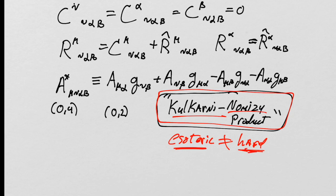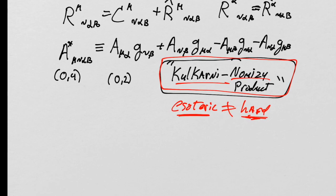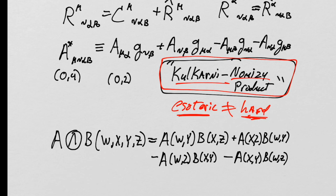We should understand what the Kulkarni-Nomizu product literally is in terms of our standard method of approaching tensors, which includes basis vectors and lots of opportunities to use the non-coordinate basis notation. So what is the Kulkarni-Nomizu product in coordinate-free language? And then how does it translate into this expression here? Let's have a look at that.